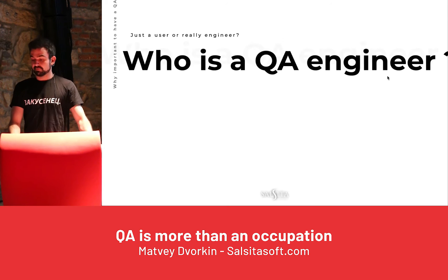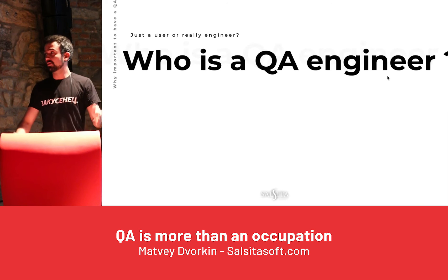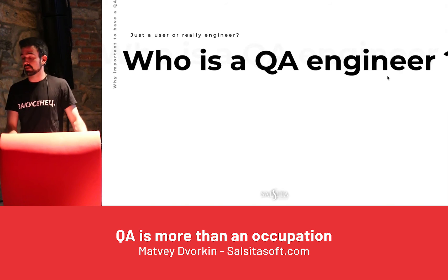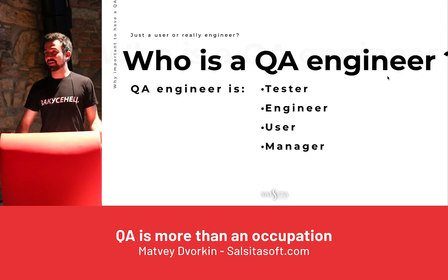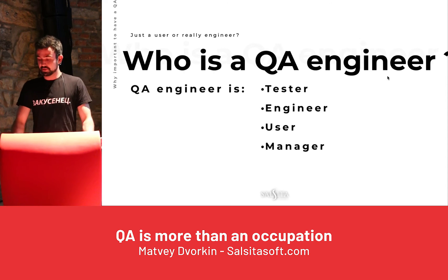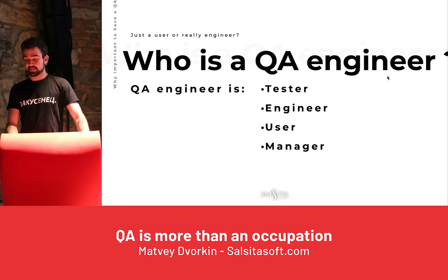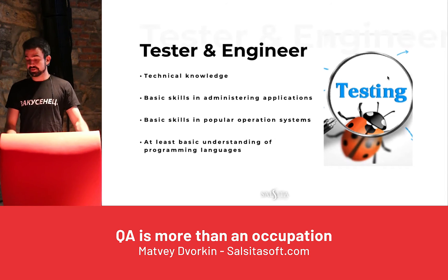So, who is the QA? Is it just the user, or the guy who checks out the software, or anything that a human can try and test? In my opinion, the QA position includes many different responsibilities. QA is a tester, engineer, user, and even manager.